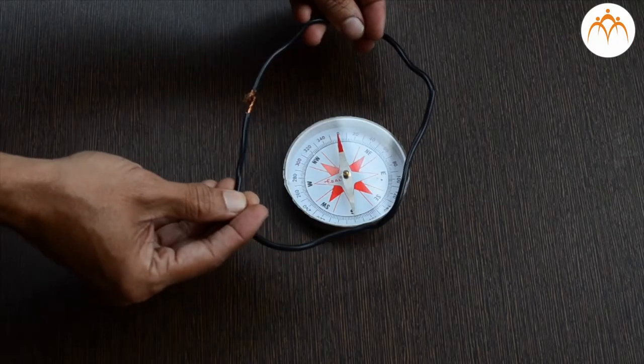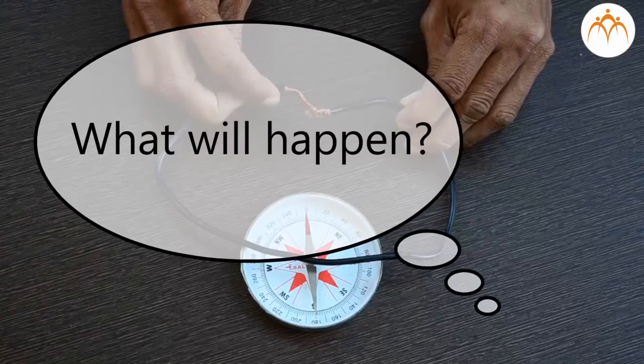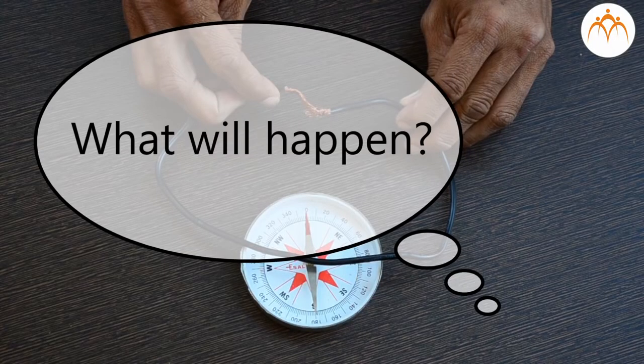If I take this insulated copper wire near the compass, what will happen? Nothing. It will not deflect. Copper wire is not a magnet.